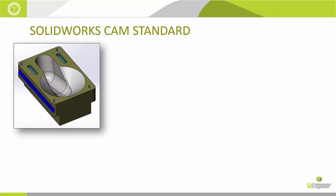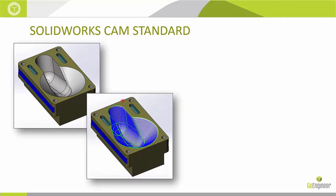Looking at this part, it has a combination of two and a half axis features — flat-bottom features. You can see holes drilled up top and a couple of slots machined, all to a uniform depth. That's really what we mean by a two and a half axis feature. A three-axis feature is that funnel shape in the middle — it has contours and is not a uniform depth. That's when we apply what we call our Z-level finishing pass, our simple three-axis machining.